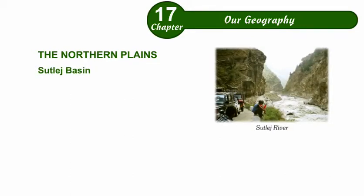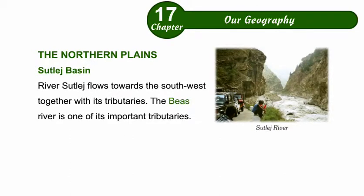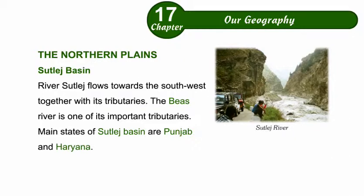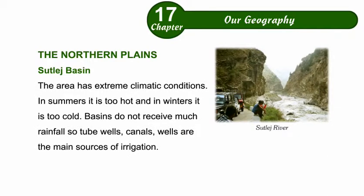Sutlej Basin: River Sutlej flows towards the southwest together with its tributaries. The Beas River is one of its important tributaries. The main states of the Sutlej Basin are Punjab and Haryana. The area has extreme climatic conditions — it is too hot in summers and too cold in winters. The basin does not receive much rainfall, so tube wells, canals, and wells are the main sources of irrigation.